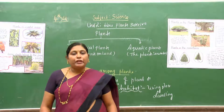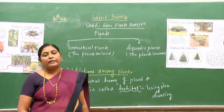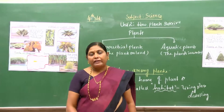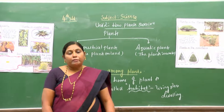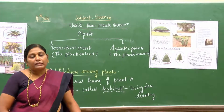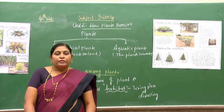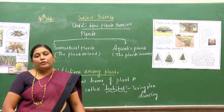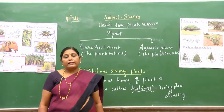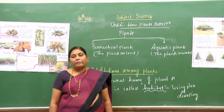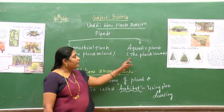Students, you may observe plants like coconut tree, neem, banyan tree, and peak plants found in our school surroundings. You might also have observed the lotus plant, lily plants, and hyacinth plants — they are found in water. Those plants are called aquatic plants.